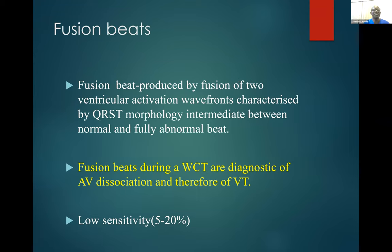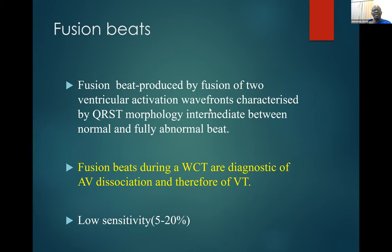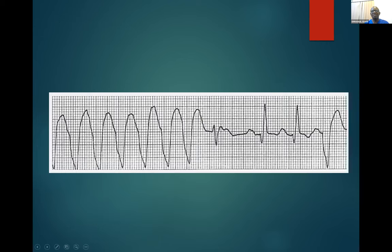Fusion beats are produced by fusion of two ventricular activation waveforms, characterized by a QRS morphology intermediate between normal and fully abnormal beats. Fusion beats during wide complex ventricular tachycardia are diagnostic of AV dissociation and therefore diagnostic of VT. They have low sensitivity of about 5 to 20%, but when you see them they are very specific for VT. You can see VT coming in on the ECG and then fusion beats appearing and then the rhythm continuing.